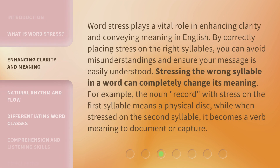Word stress plays a vital role in enhancing clarity and conveying meaning in English. By correctly placing stress on the right syllables, you can avoid misunderstandings and ensure your message is easily understood. Stressing the wrong syllable in a word can completely change its meaning. For example, the noun 'record' with stress on the first syllable means a physical disc, while when stressed on the second syllable, it becomes a verb meaning to document or capture.